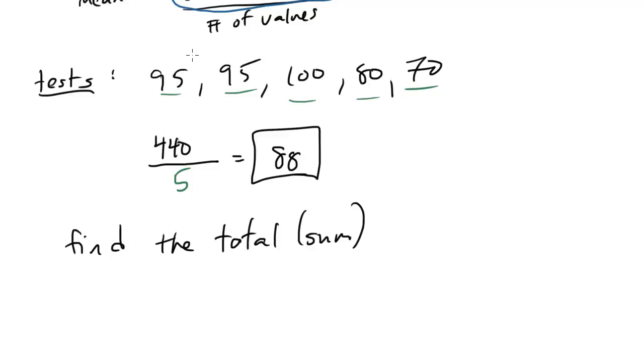But if you don't have all the numbers, if you just have the mean and the number of values, you can still find the total by multiplying the mean by the number of values. And again, I go into some detail with that in the math tactics series.